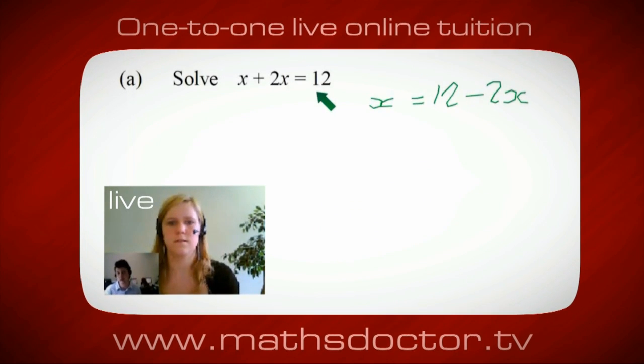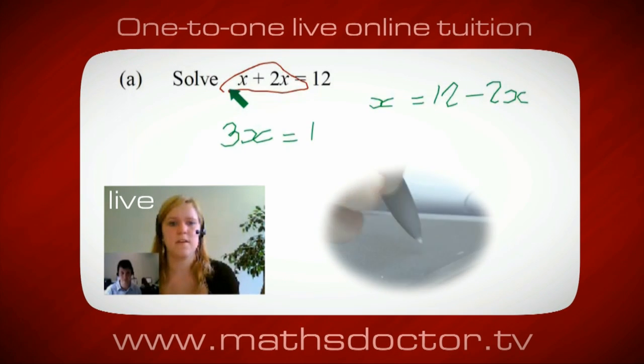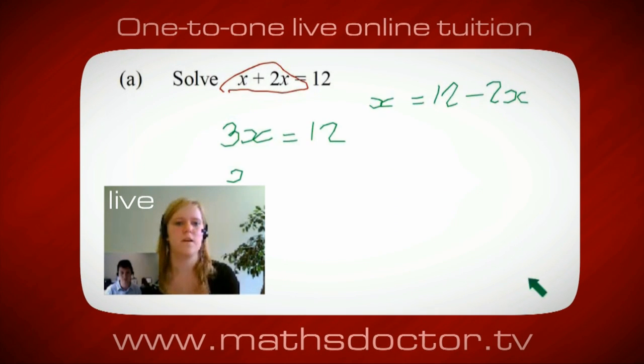Okay, so a lot of the time we want to get x by itself, but what we want to do first is get all of these x's together. So can you see anything we can do with this? Get all these together in one place. Oh, okay, it's 3x, isn't it? Yeah, absolutely. So 3x equals 12. Oh, and so x equals 4. Brilliant. Spot on. Well done.